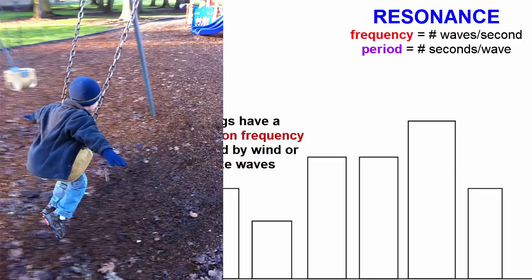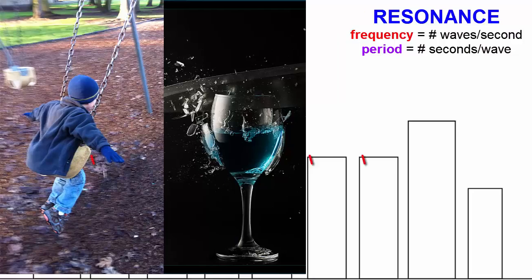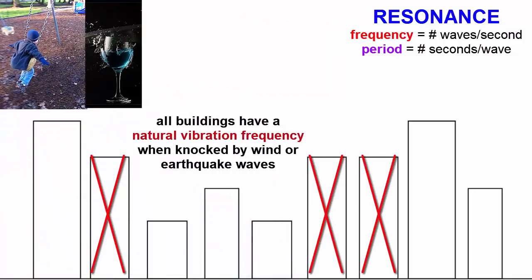You can see examples of resonance when you push a child on a swing. If your pushing period matches the child's swinging period, the child will swing higher and higher, or when an opera singer matches the frequency of a sound wave to the frequency of a wine glass and makes it shatter. After an earthquake, you would see evidence of resonance if you notice that all buildings of a particular height experienced more damage than other buildings shorter or taller.